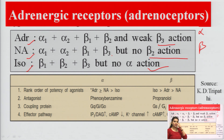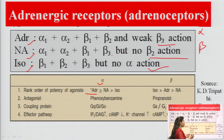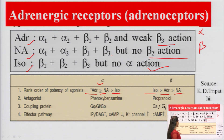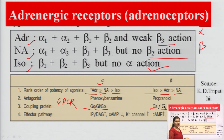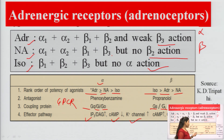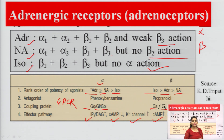The rank order of potency at the alpha receptor is: adrenaline > noradrenaline > isoprenaline. At beta receptors: isoprenaline > adrenaline > noradrenaline. Both alpha and beta receptors are G-protein-coupled receptors (GPCRs). Coupling proteins may be Gq, Gi, or G-naught for alpha receptors; Gs or Gi for beta receptors. Secondary messenger pathways include IP3/DAG for Gq, inhibition of adenylyl cyclase for Gi, and stimulation of adenylyl cyclase for Gs.